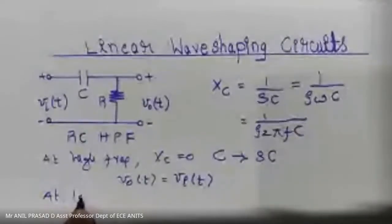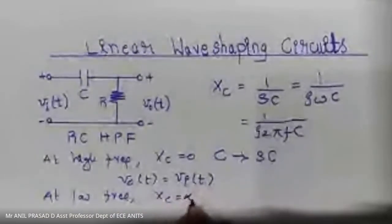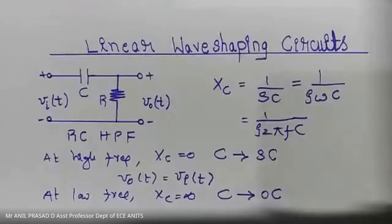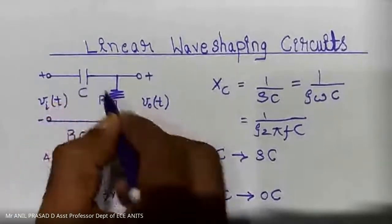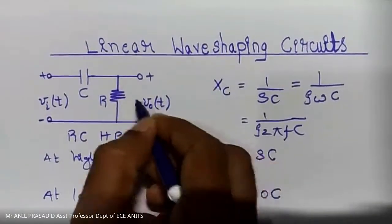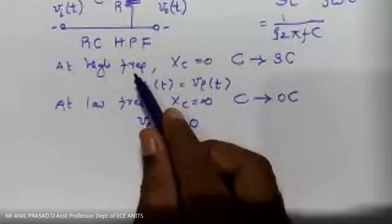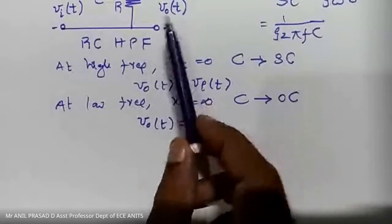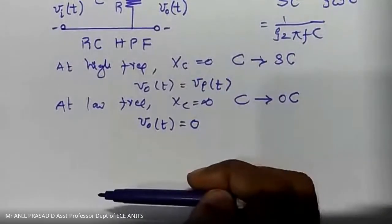At low frequencies, XC is infinity, meaning your capacitor acts as an open circuit. When the capacitor is open circuit, no current can flow through R. When no current flows through R, the output voltage is 0 — the circuit is not passing low frequencies. The circuit is passing only high frequencies. That is why the circuit where output is taken across resistor R is called the RC high pass filter circuit.